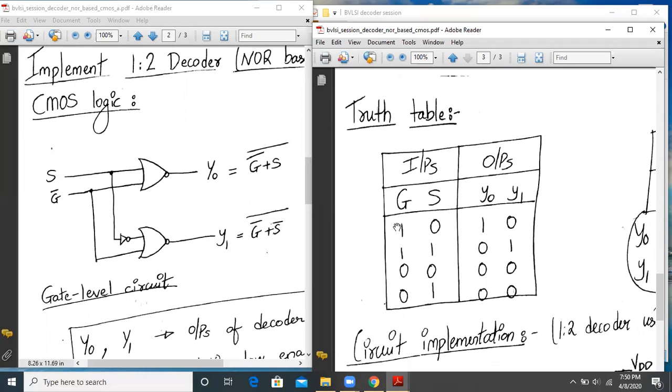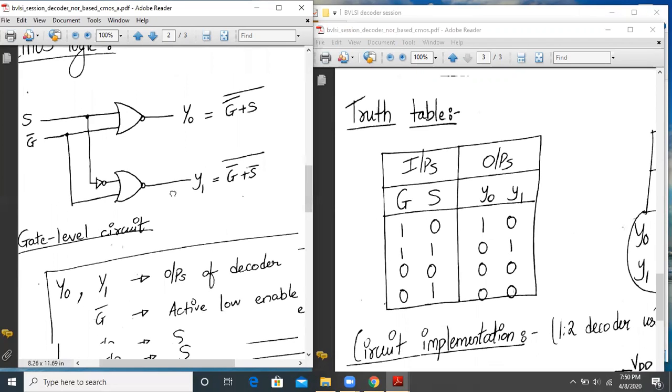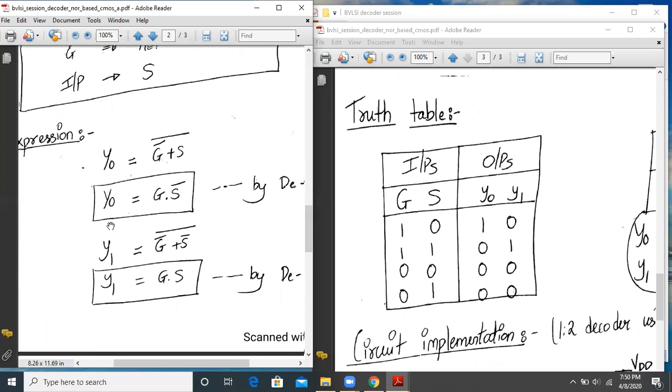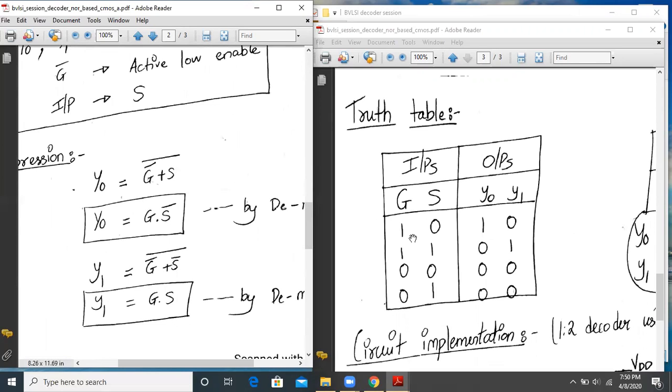Basically, my expression says Y0 will be 1 only when G is 1 and S-bar is also 1. So in this case, my G is 1 and S is 0, so S-bar will be 1. Hence Y0 will be 1. Similarly, Y1 will be G into S. So in this case, G into S will be 1 into 0, so that will be 0.